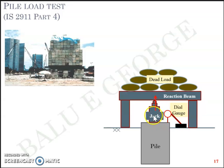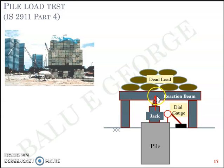What really happens is that when the jack is operated it moves in the upward direction, and the reaction beam with the dead load resists its movement — so that force is transferred onto the pile foundation. The jack tries to move upward, the reaction beam pushes it downward, and that acts as a compressive load onto the pile foundation. When the compressive load is applied there is obviously deformation, which is measured using the dial gauge. This particular test is an axial compressive load test to arrive at the ultimate compressive load. There are also tests for ultimate lateral load, ultimate pull-out load, and cyclic load tests to differentiate skin friction and end bearing.